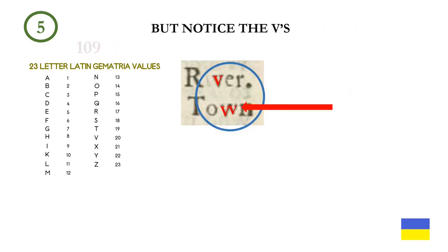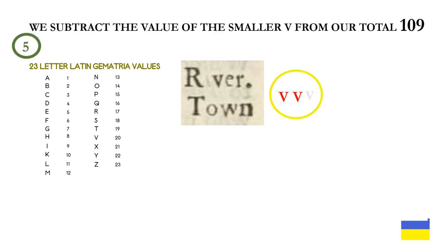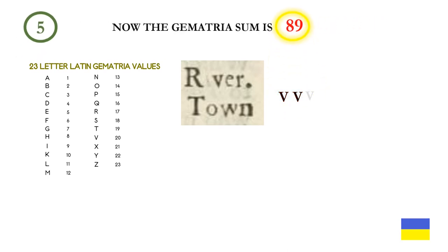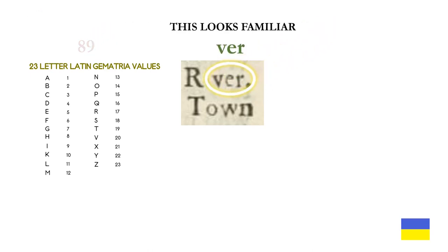Notice the v's — two are larger than the third. We subtract the value of the smaller v from our total, 109. Now the gematria sum is 89, a number we have seen over and over again in the authorship game. 89 is what we got from equation two earlier on. This looks familiar: V-E-E-R.